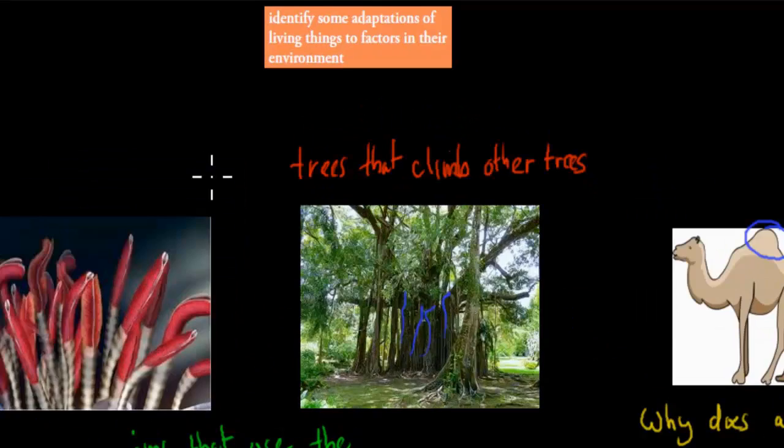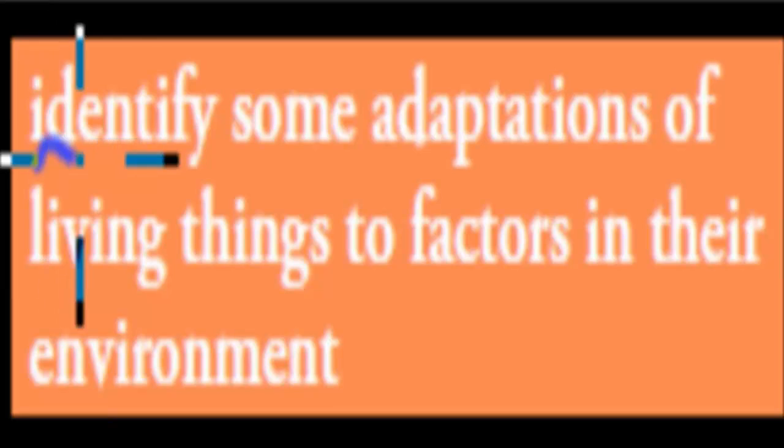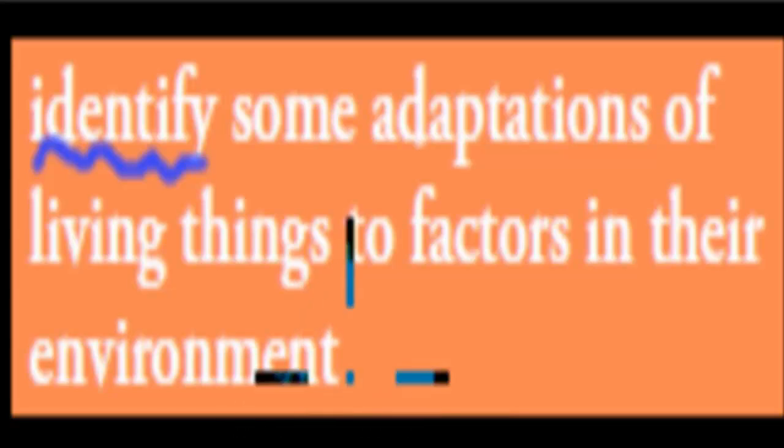And that would be a very good answer, because the actual dot point says identify some adaptations of living things to factors in their environment. So this dot point is all about that—you should know the adaptations but know why as well, so how the adaptations are linked to the environment they live in.